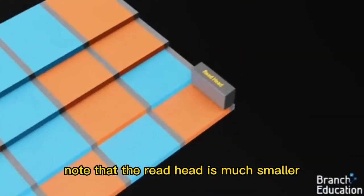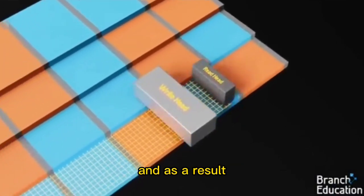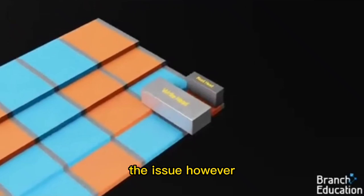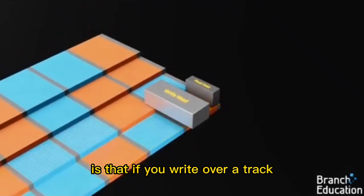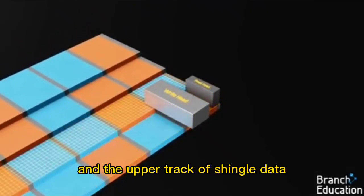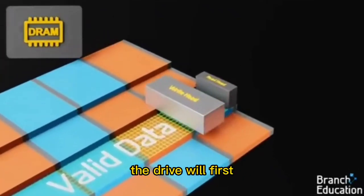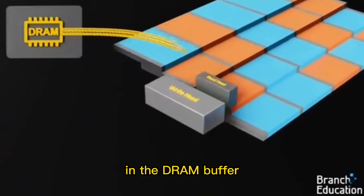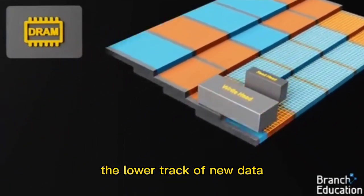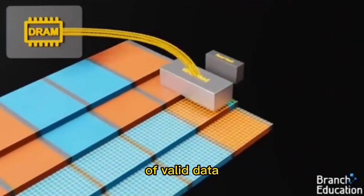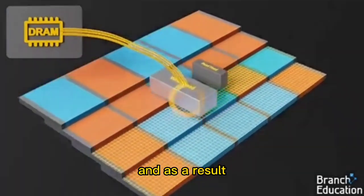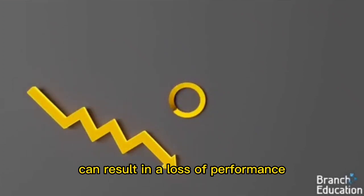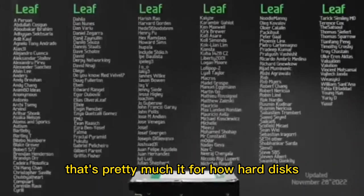Note that the read head is much smaller than the write head, and as a result, one shingled track can be reliably read at a time. The issue, however, is that if you write over a track, and the upper track of shingled data is still good or valid data, the drive will first have to read and store that valid data in the DRAM buffer, and then write both the lower track of new data, and the upper track of valid data. And as a result, the buffering and the extra read and write steps can result in a loss of performance. That's pretty much it for how hard disks work.